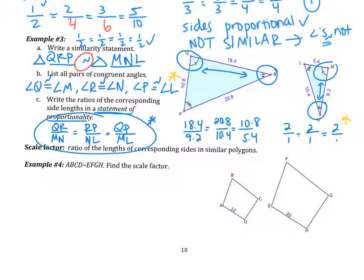In your classwork, you'll be asked to prove that figures are similar. You'll need to show both that the angles are congruent and the sides are proportional. The portion showing the ratios of corresponding sides is called the statement of proportionality.